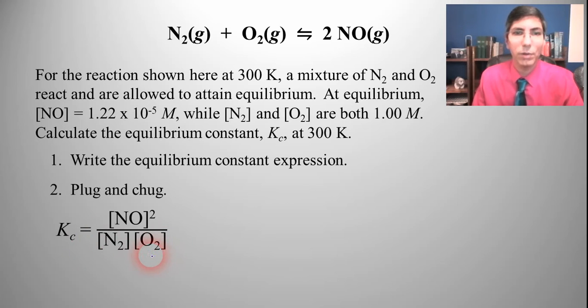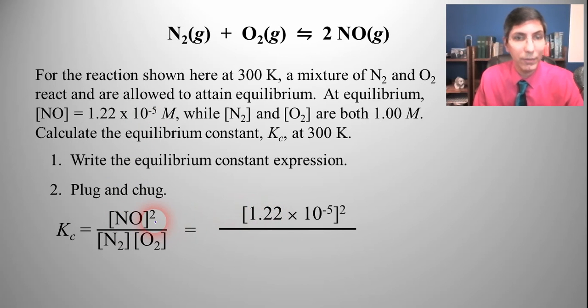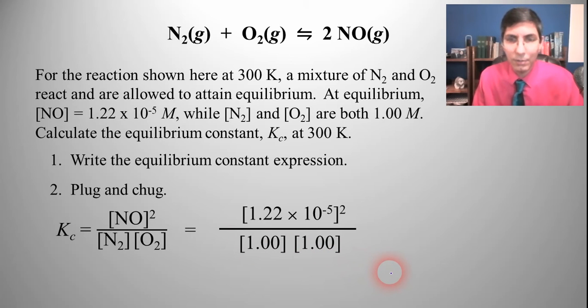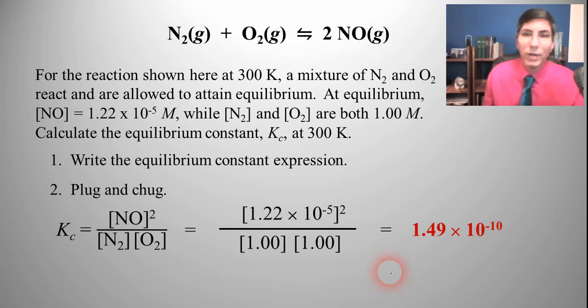Now we can just plug and chug those numbers from the problem into the expression that we just wrote. So NO is 1.22 times 10 to the negative fifth, and we're going to have to square that. N2 and O2 will both be one and those will go into those respective places in the denominator. So when we evaluate this number we can find that Kc is 1.49 times 10 to the negative tenth. So that's a very small number.